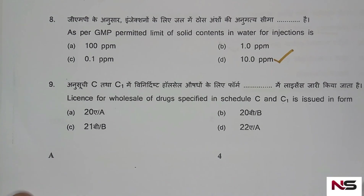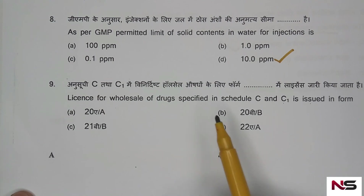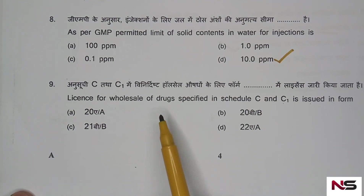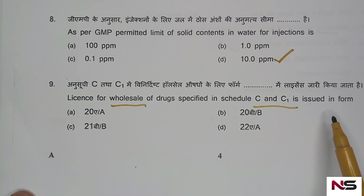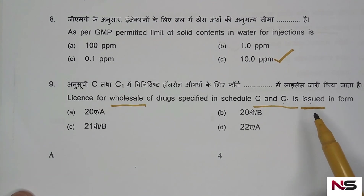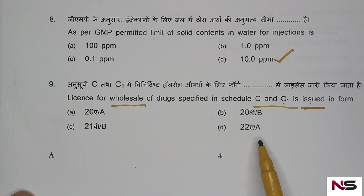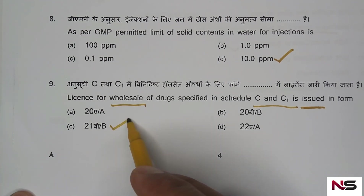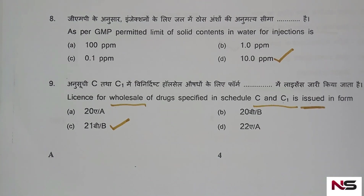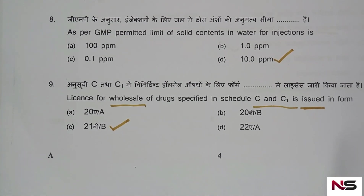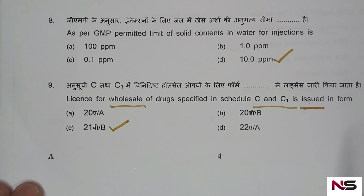Question 9 is from pharmaceutical jurisprudence: License for wholesale of drugs specified in Schedule C and Schedule C1 is issued in form number — options: A) 20A, B) 20B, C) 21B, D) 22A. The correct answer is option C, 21B. Different forms and shortcuts for remembering form numbers were already discussed in previous videos — check the description box for the link.